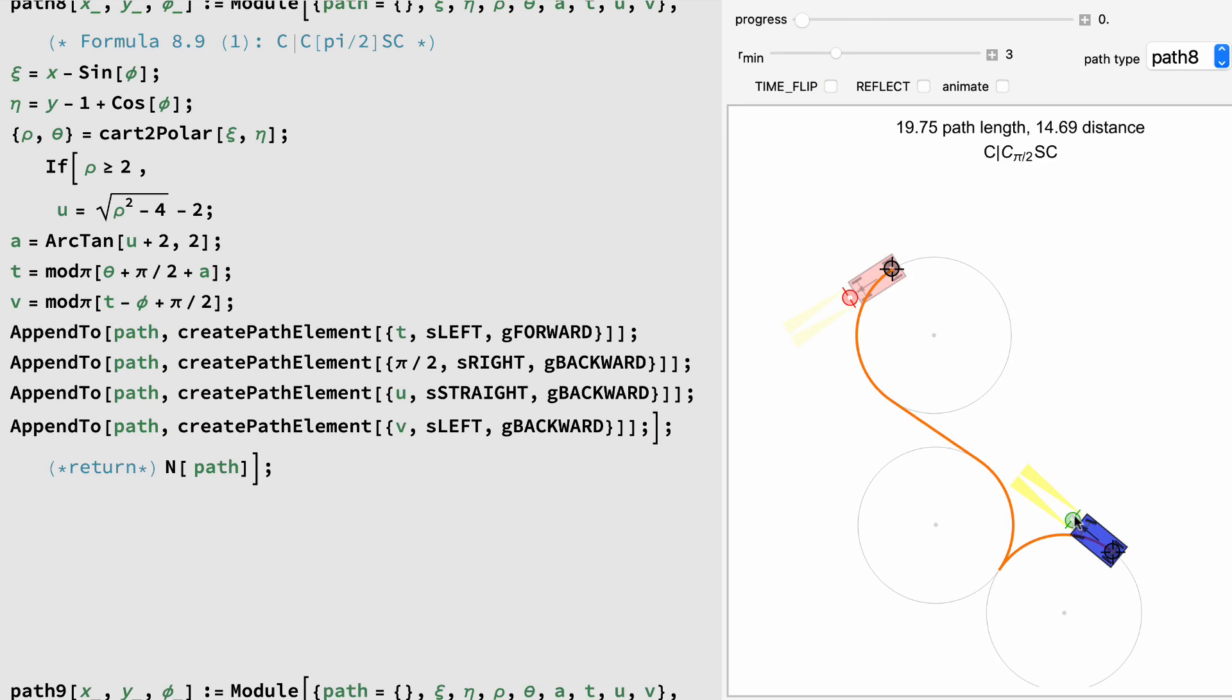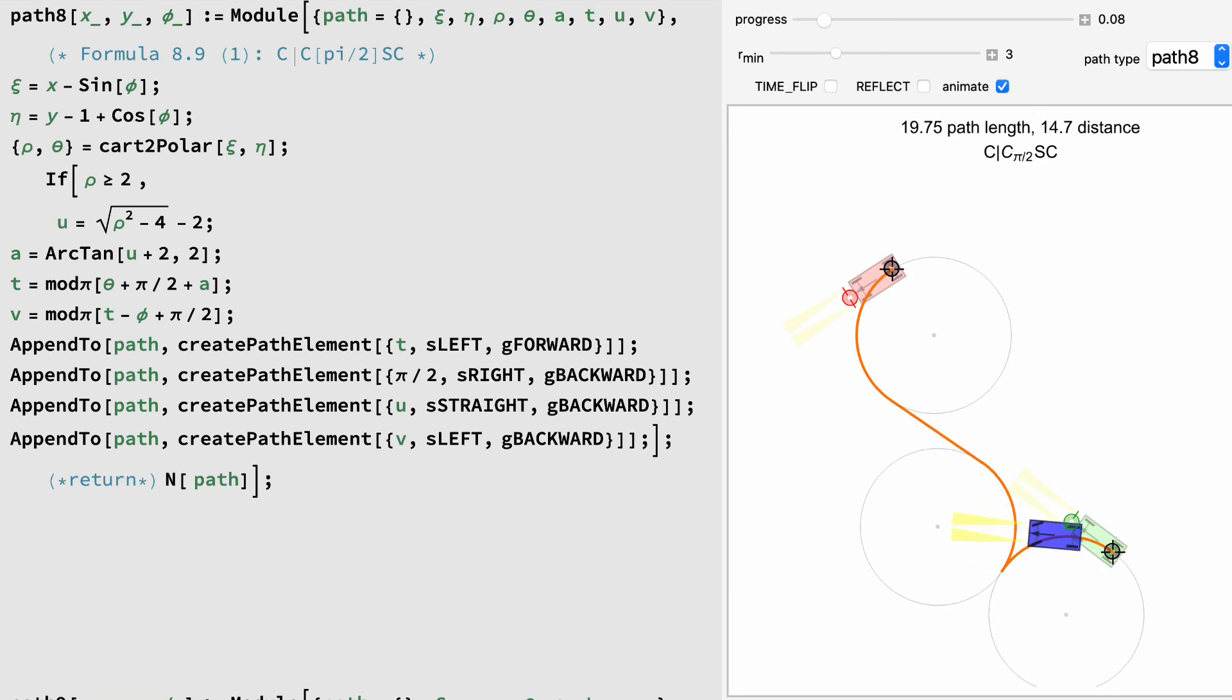Path 8 is a curve, gear switch, curve of 90 degrees, straight, and then another curve. Whew! It is computed with four trig operations and a Cartesian to polar conversion.